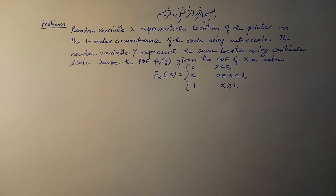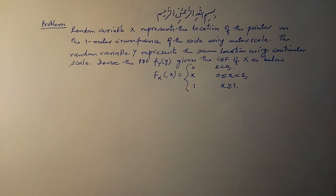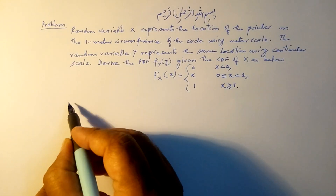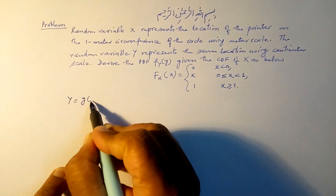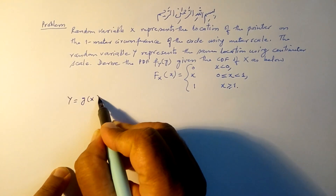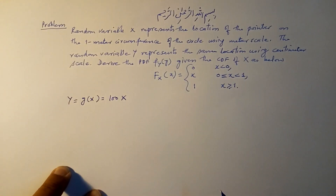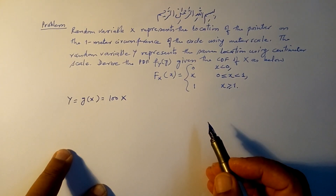We are to derive the PDF of the derived random variable Y. It is clear that Y is a random variable which is a function of random variable X, so we can write Y as a function of X. Since one meter equals 100 centimeters, this gives us Y = 100X.